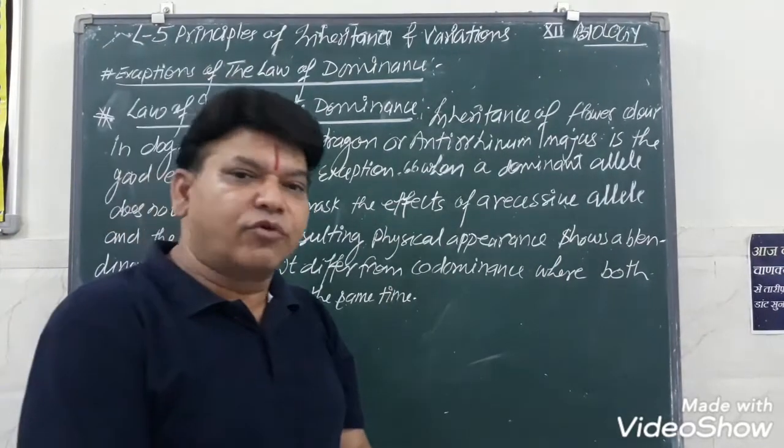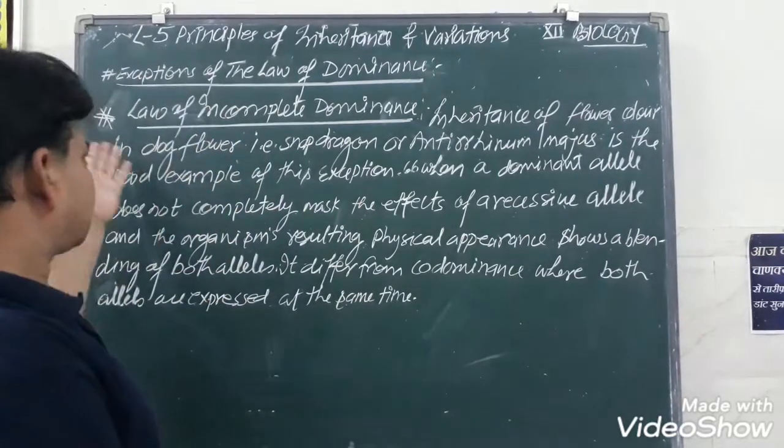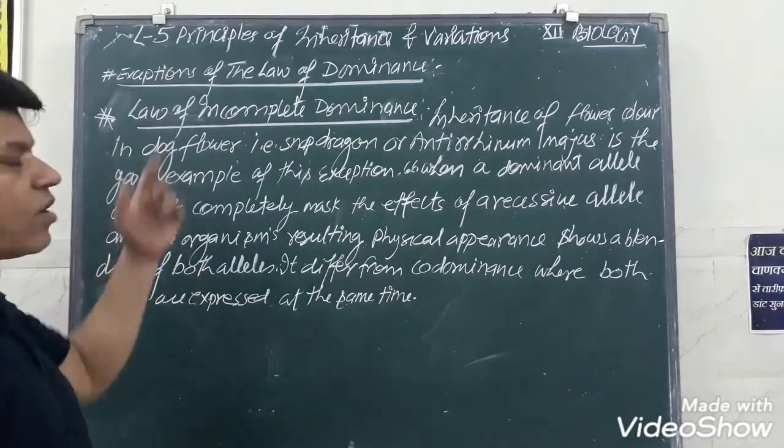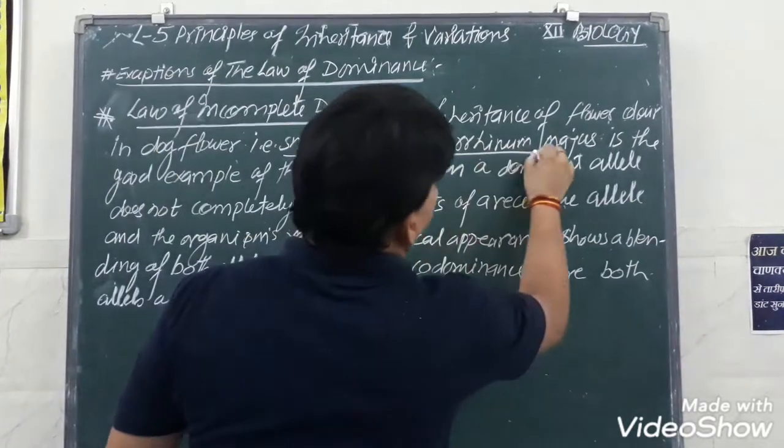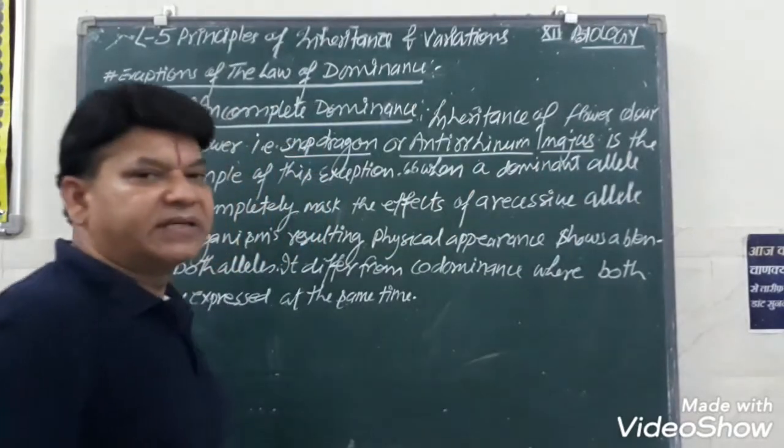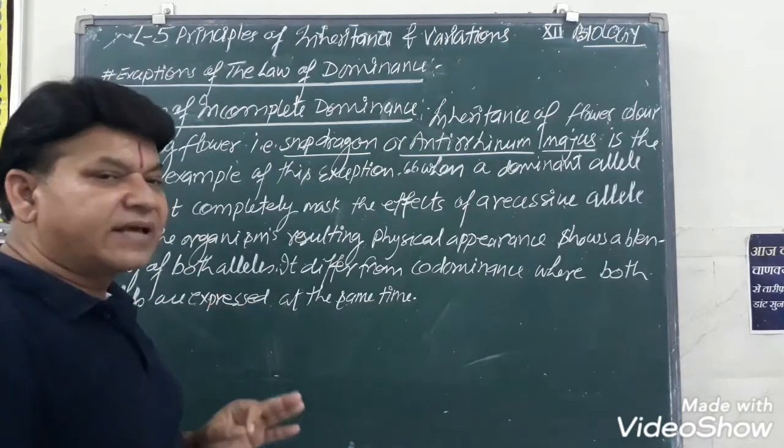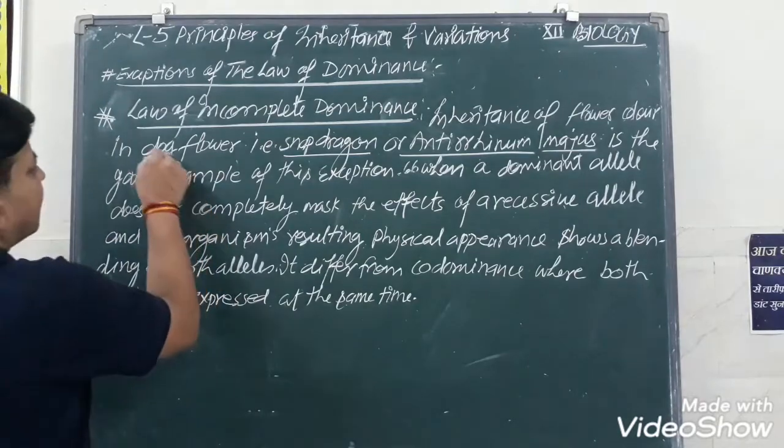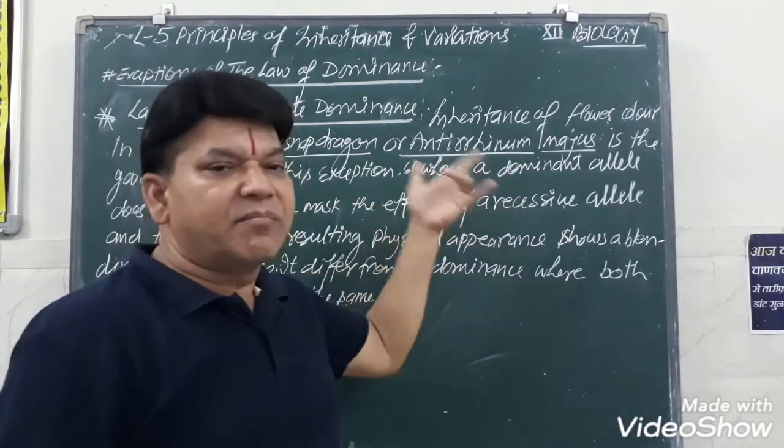So many times in the board examination in three marks as a short note. In snapdragon, that is dog flower, it is also known as Antirrhinum majus. This is the good example. We can see that the incomplete dominance is shown by the dog flower and snapdragon. This scientific name is Antirrhinum majus, is the good example of this exception.